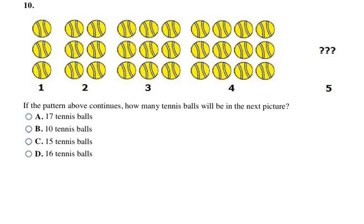Now we're looking at a picture pattern. It says, if the pattern continues, how many tennis balls will be in the next picture, the fifth picture? I'm going to count up how many tennis balls there are in each picture. The first picture has three tennis balls. The second picture has six. The third picture has nine. And the fourth picture has 12.